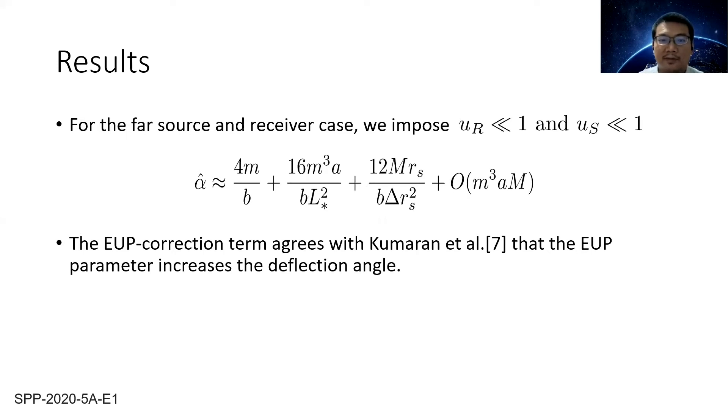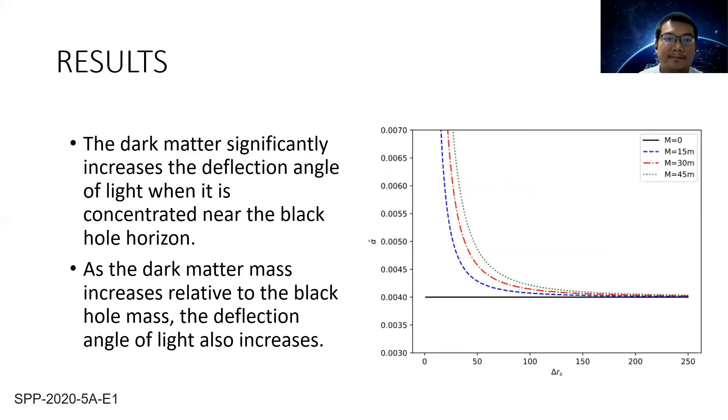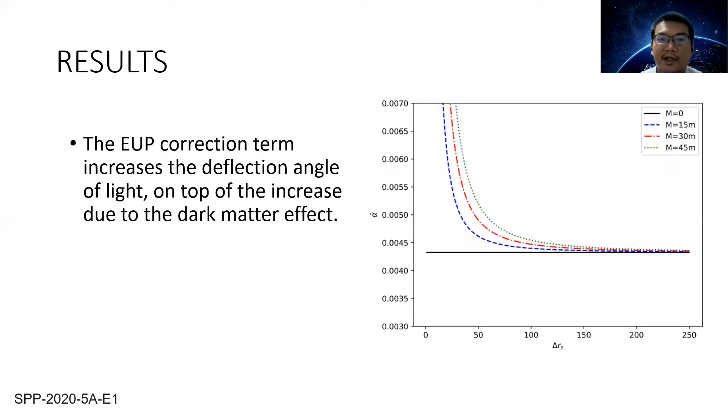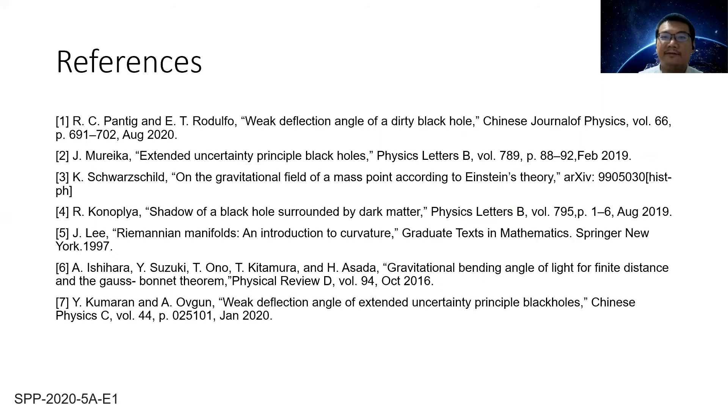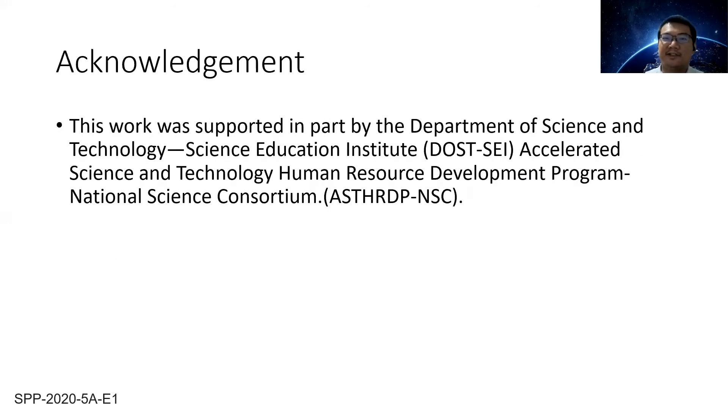The EUP correction term here agrees with Kumaran et al.'s paper that the EUP parameter increases the deflection angle. The dark matter significantly increases the deflection angle of light when concentrated near the black hole. As dark matter mass increases relative to the black hole mass, the deflection angle also increases. The EUP correction term increases the deflection angle on top of the increase due to dark matter effect. Here are the references and acknowledgements. Thank you very much.